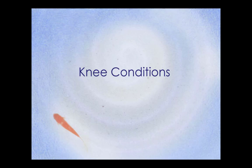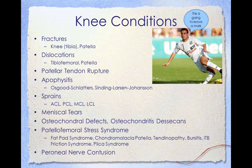Knee conditions to be discussed within this lecture include fractures of the knee, tibia, and patella, dislocations of the tibiofemoral joint and patella, patella tendon rupture, apophysitis including Osgood-Schlatter's and Sinding-Larsen-Johansson disease, sprains of the ACL, PCL, MCL, and LCL, meniscal tears, osteochondral defects and osteochondritis dissecans, and patellofemoral stress syndrome which includes fat pad syndrome, chondromalacia patella, tendinopathy, bursitis, IT band friction syndrome, and plica, as well as peroneal nerve contusion.